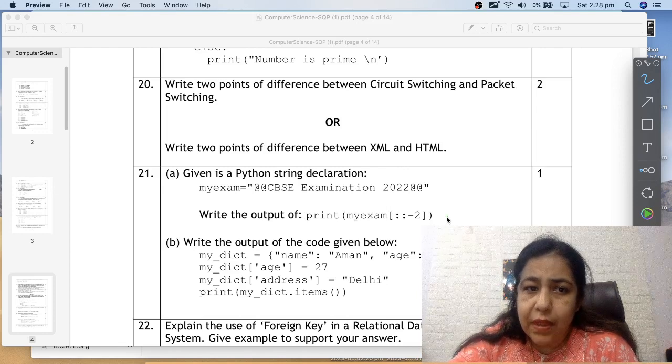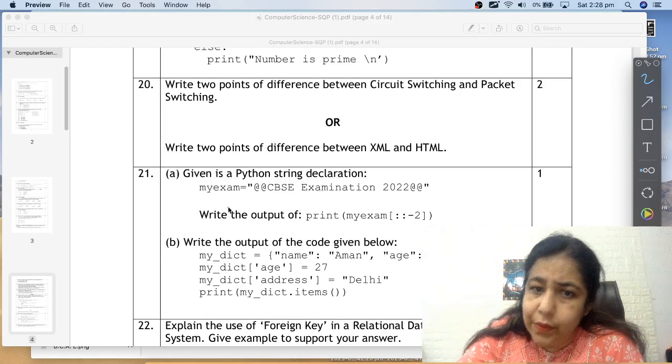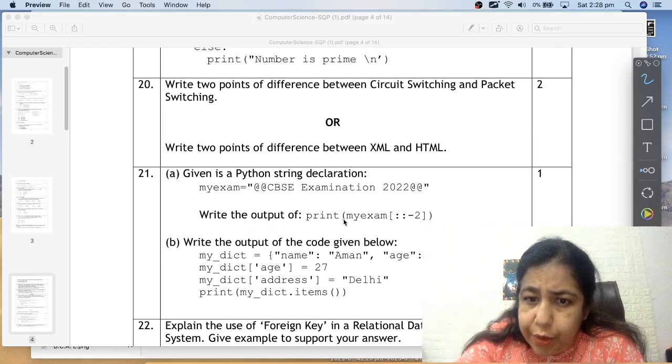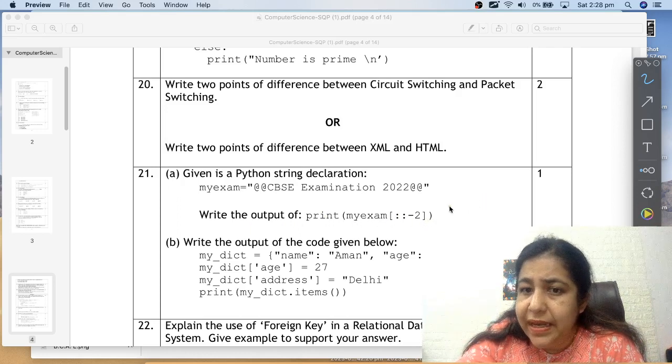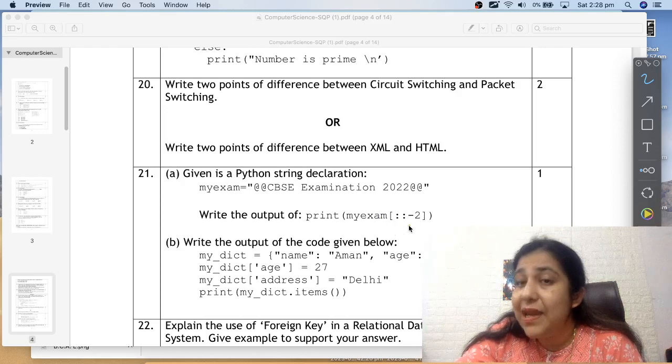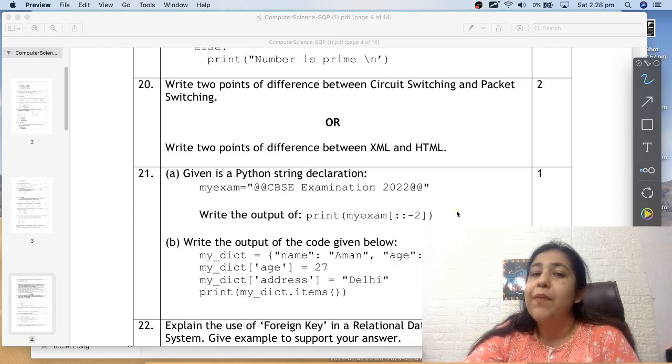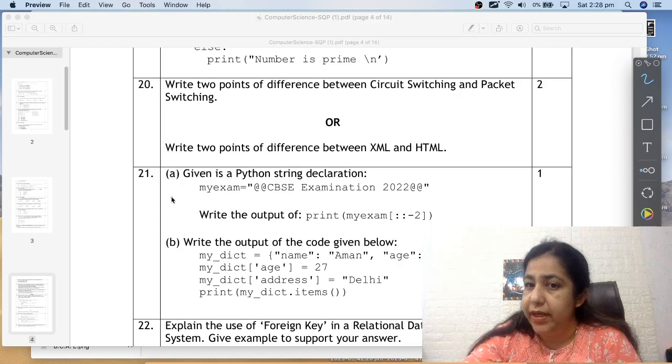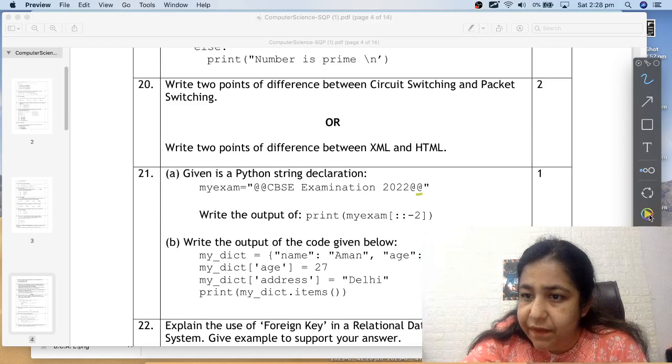Question 21. Given is a Python string declaration, my exam equals something. Write the output of print my exam colon colon minus two. One mark question. We are doing slicing. Start not given, end not given. Step given is minus two. When your step is negative, your answer always goes right to left.